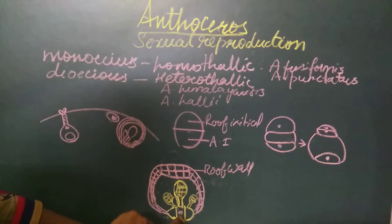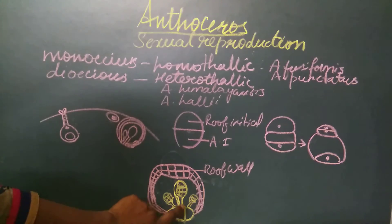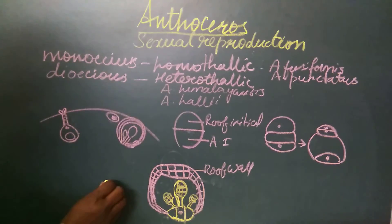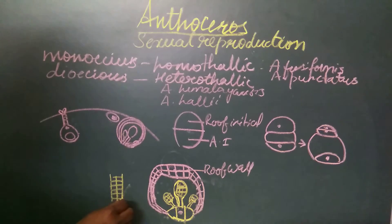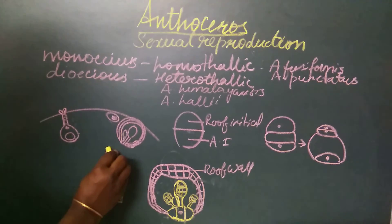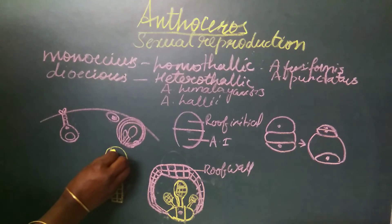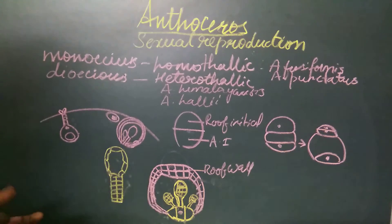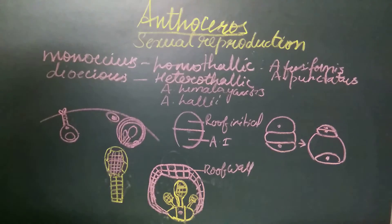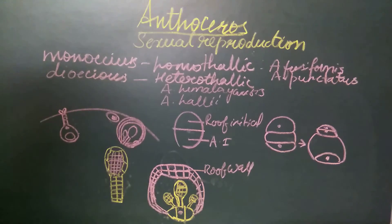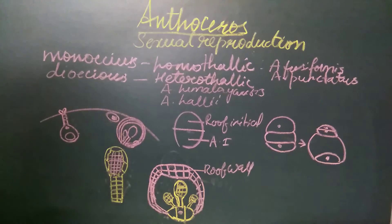Now, how does the antheridium grow from a single cell? The antheridium has a slender multicellular elongated stalk and a pouch-like body covered by an outer wall called the jacket. Inside the jacket we find a large number of cells called androcytes, which later metamorphose into antherozoids. This entire complex structure — the stalk and club-shaped body — develops from a single cell at the bottom of the chamber.